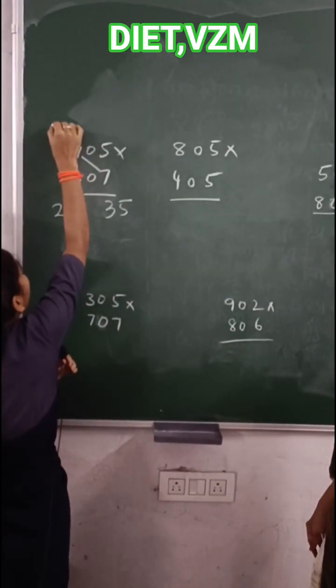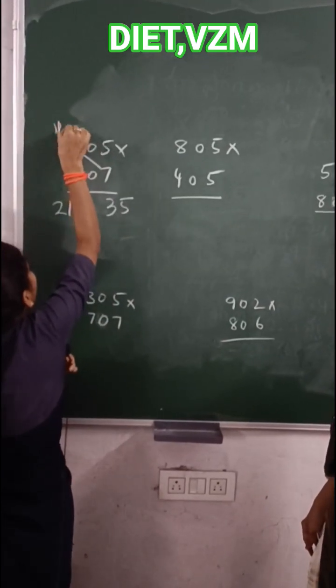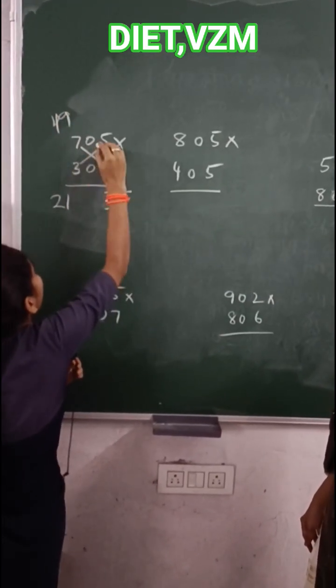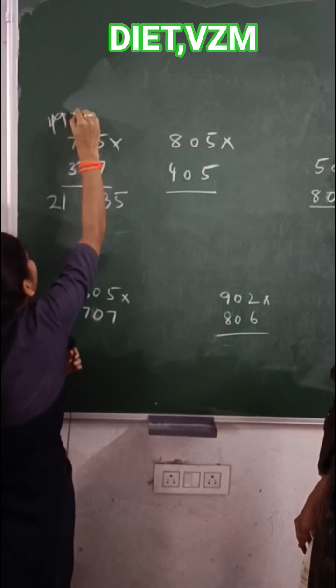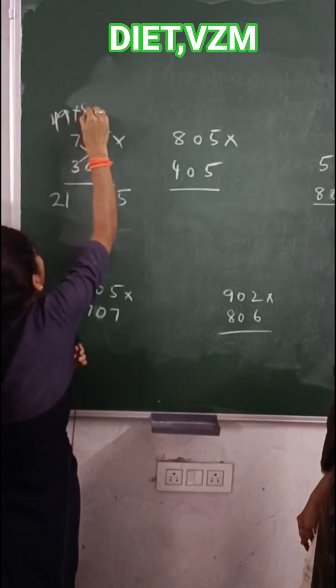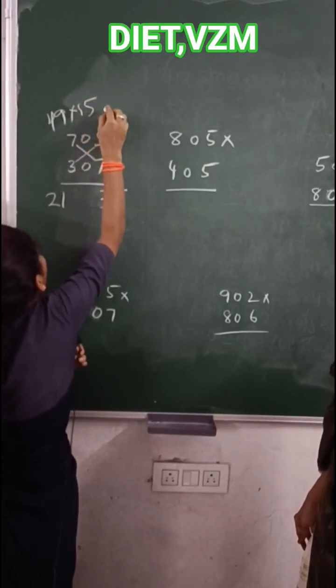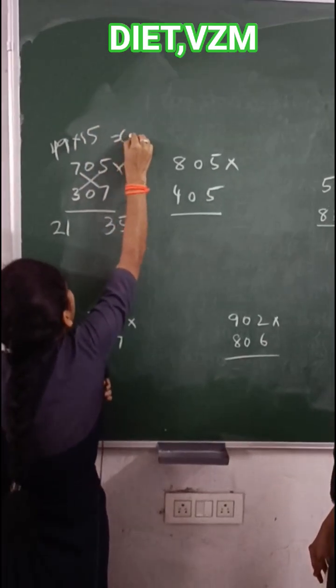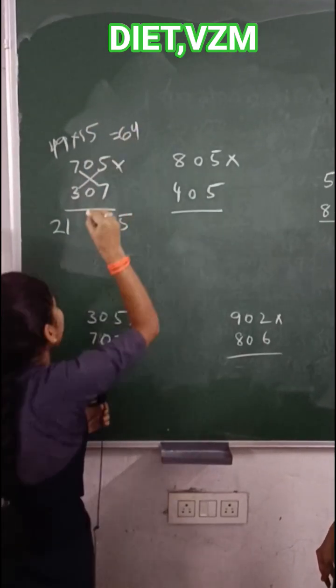After cross multiplication, 7×7 is 49. 5×3 is 15. Plus 5×8 is 15. 64.